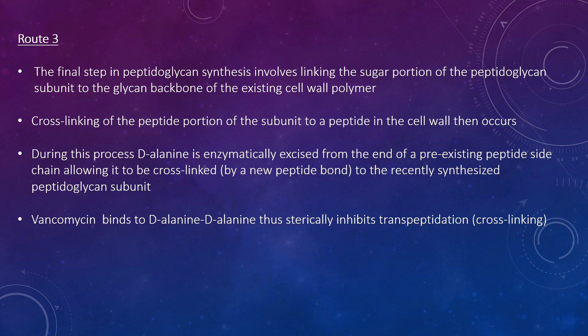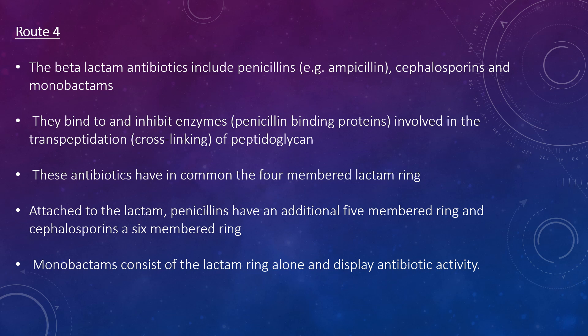The beta-lactam antibiotics include penicillins such as ampicillin, cephalosporins, and monobactams. These bind to and inhibit penicillin-binding proteins involved in the transpeptidation cross-linking of peptidoglycan. They share in common the four-membered beta-lactam ring. Penicillins have an additional five-membered ring; cephalosporins have a six-membered ring. Monobactams consist of the lactam ring alone and still display antibiotic activity.